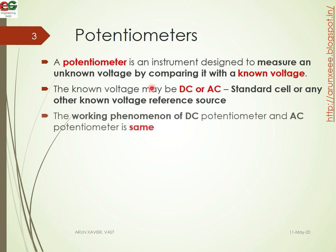A potentiometer is an instrument which is designed to measure an unknown voltage by comparing it with a known voltage. There are two voltages: the unknown voltage that we need to find out, and the known reference voltage. Potentiometers can be DC potentiometers or AC potentiometers.